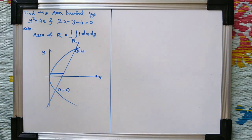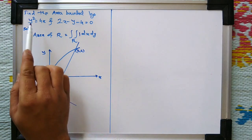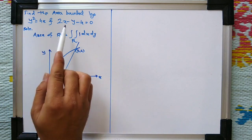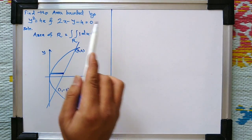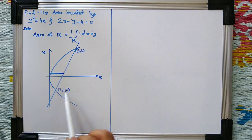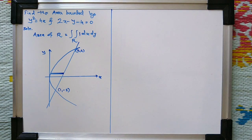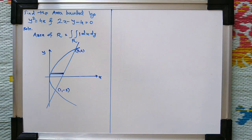First, we have to find the points of intersection of these two curves. By simultaneously solving y² = 4x and 2x − y − 4 = 0, we get the intersection points (1, −2) and (4, 4).